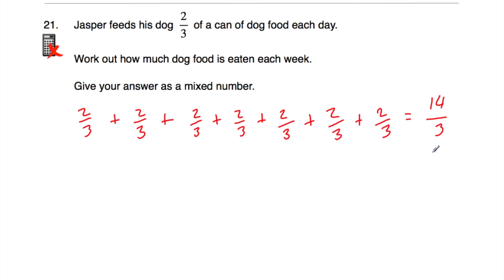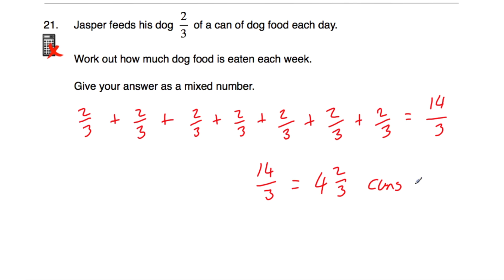14 thirds as a mixed number: how many 3s go into 14? 3, 6, 9, 12 — that's 4, remainder 2. So that's 4 and 2 thirds of a can of dog food each week. Another approach is to take 2 thirds and multiply by 7: 7 lots of 2 thirds equals 14 thirds, and then convert to the mixed number 4 and 2 thirds. That's how much dog food is eaten each week.